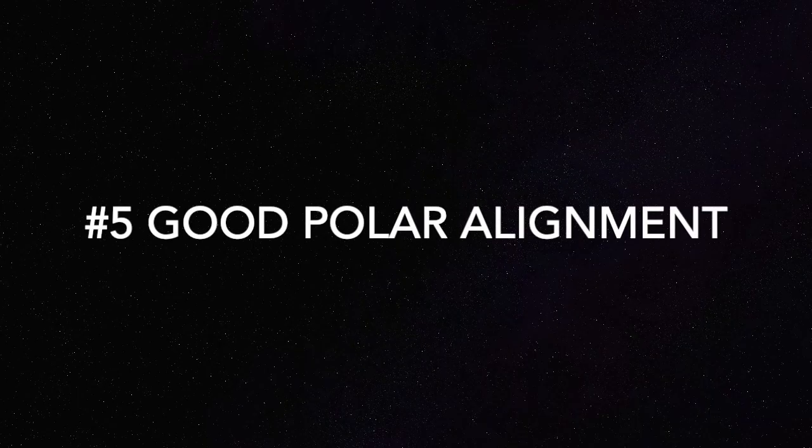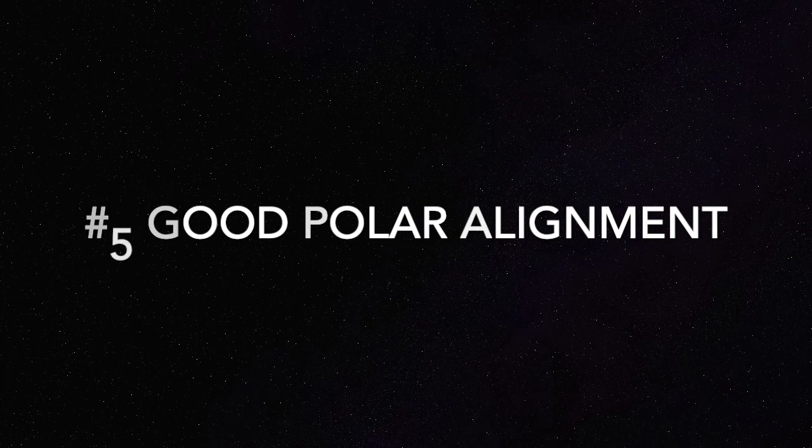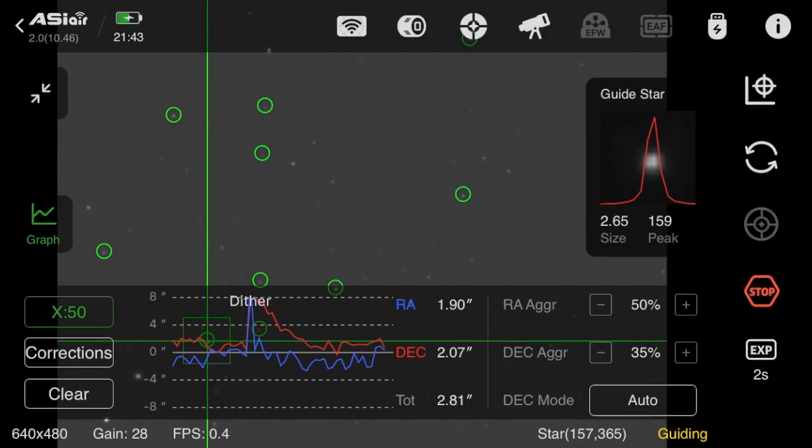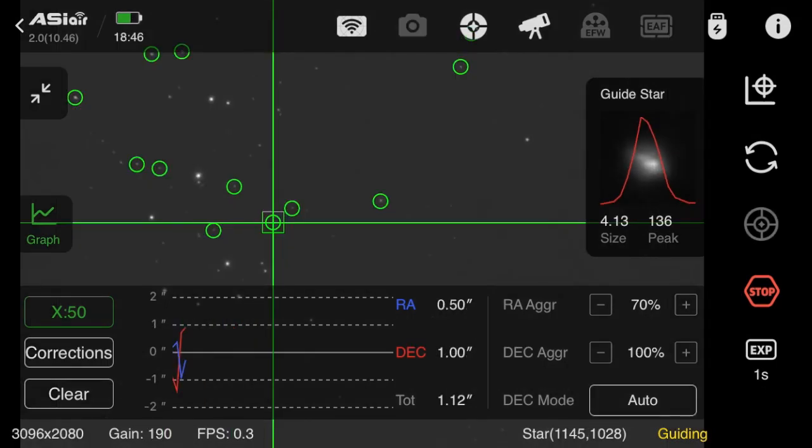Tip number five, good polar alignment. A good polar alignment will definitely improve your auto guiding, but it's not a magic bullet because of other issues such as backlash and errors in your mount and whatnot. So I have found that if I can get the polar alignment within five minutes, then the corrections can be easily handled with the guide scope. But do spend some time to get decent polar alignment to improve your guiding.